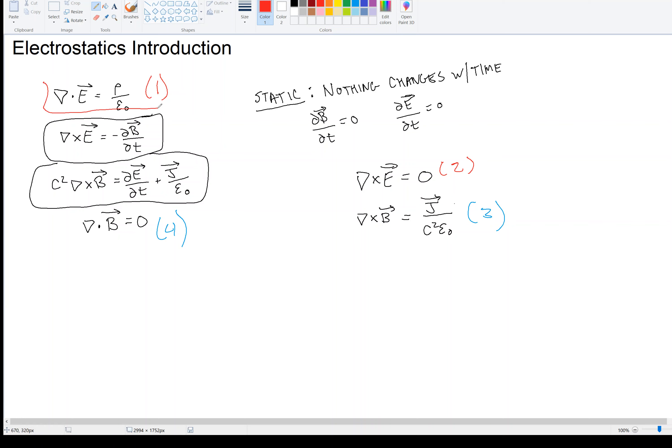If we consider just the first two equations, being that we can separate electricity from magnetism now, if we consider just those two equations, then we're talking about electrostatics. And if we consider just equations three and four, then we're considering the subject of magnetostatics. We're talking about, for the moment, electrostatics.